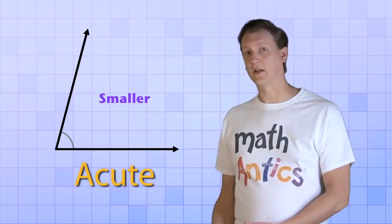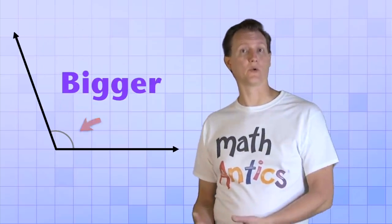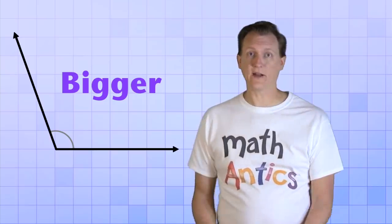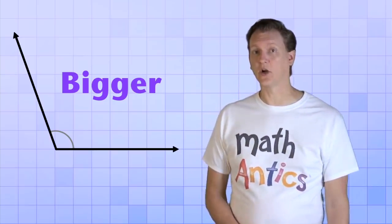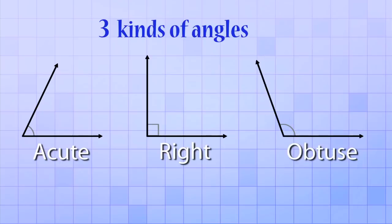On the other hand, if we rotated our ray to the left instead of the right, we would get an angle that's bigger or greater than a right angle. Angles that are greater than right angles are called obtuse angles. So there are three main kinds of angles that you need to know about: right angles, acute angles, and obtuse angles.